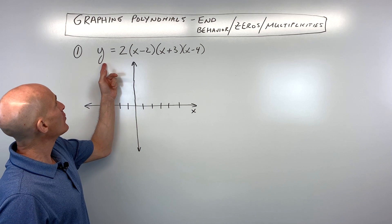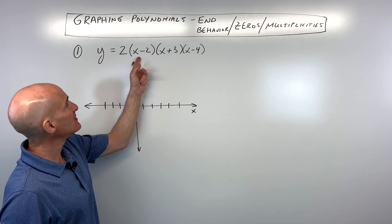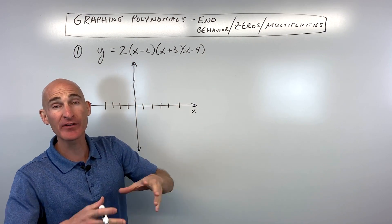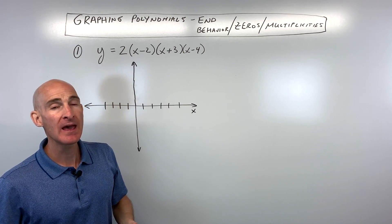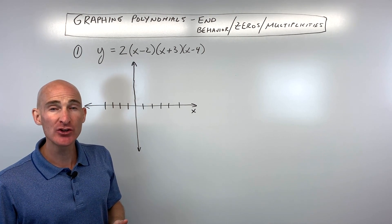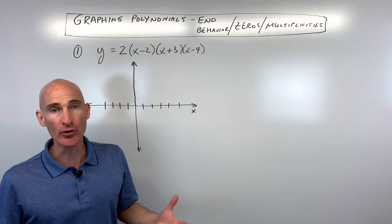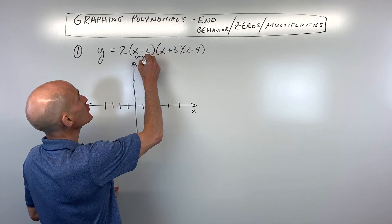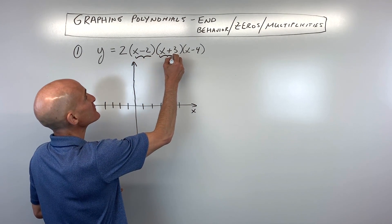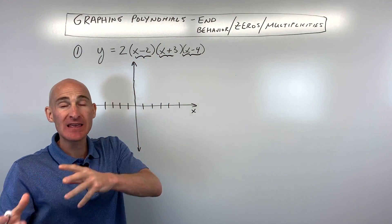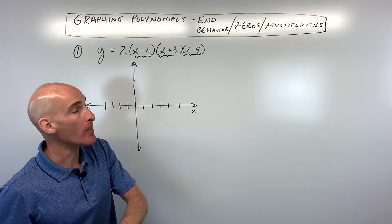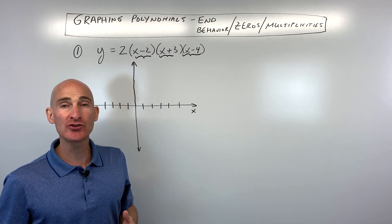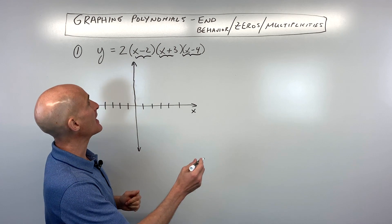The first example: we have y equals 2 times (x minus 2)(x plus 3)(x minus 4). This one's already in factored form, and the first thing you want to do is find the zeros. To find the zeros, you take each of these factors and set them equal to zero. If it's not factored, try to factor it — we'll do that in the next example.